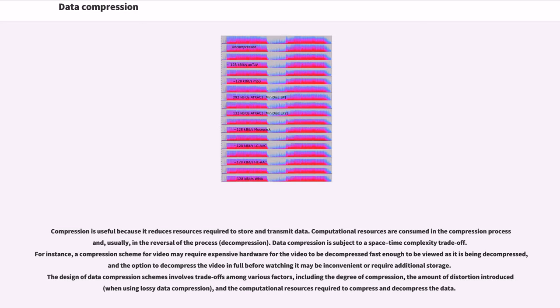Compression is useful because it reduces resources required to store and transmit data. Computational resources are consumed in the compression process and, usually, in the reversal of the process, decompression.